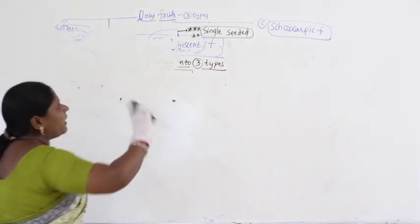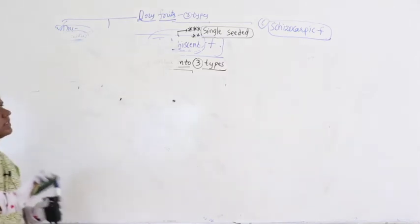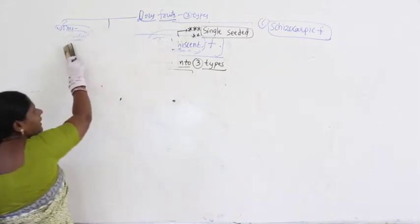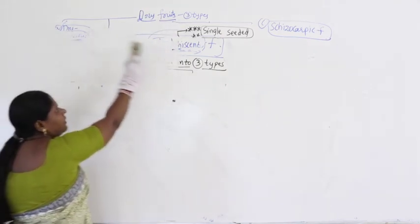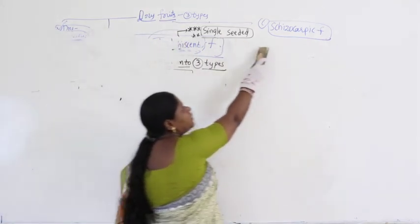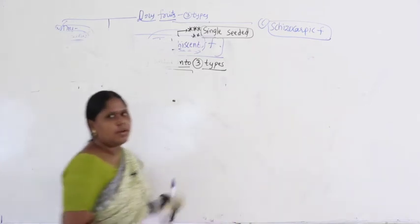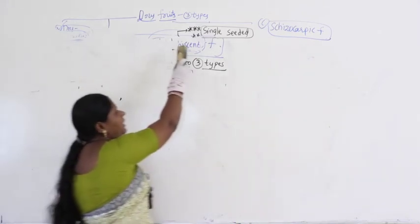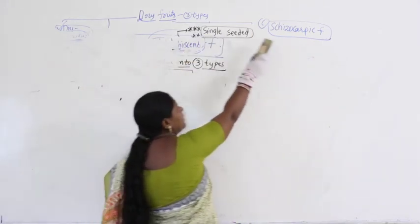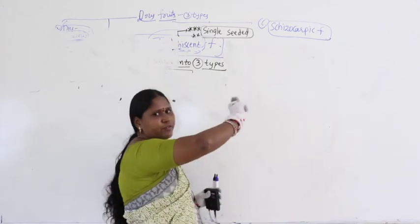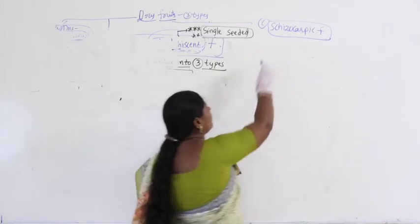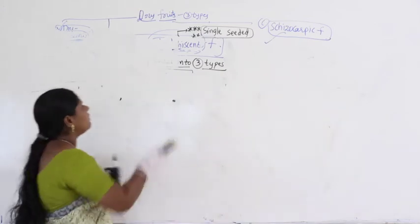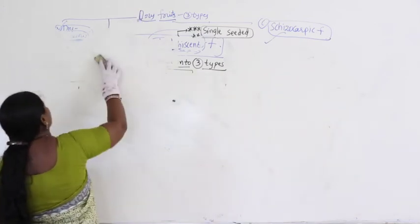Alright, coming back to the overview: dry fruits are divided into 3 types — dry dehiscent, dry indehiscent, and schizocarpic fruits. Now what is left for us to discuss: we have to discuss schizocarpic fruits, then we will complete dry fruits.